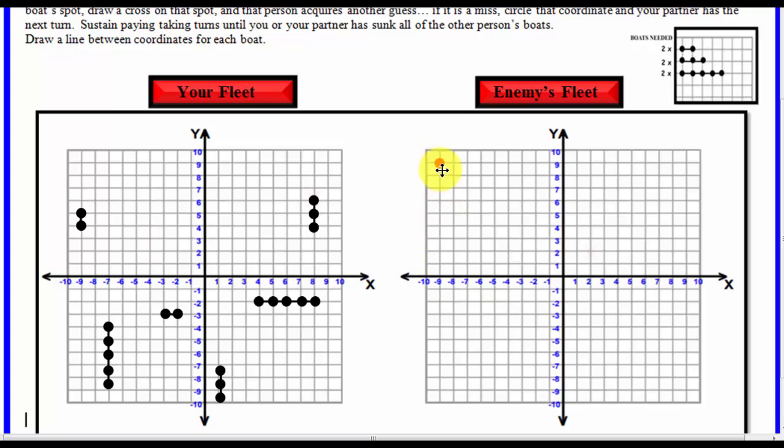So if it's a miss, then he goes next, and he says, I would like coordinates 8, 6. So, it's a hit. So if it's a hit, he gets another try.